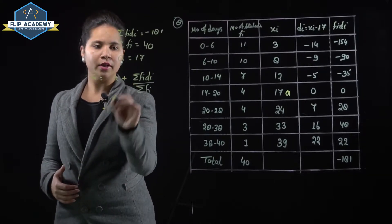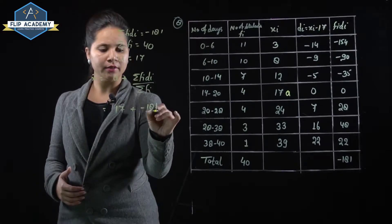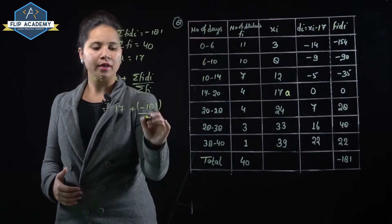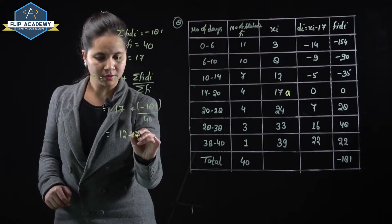A value is 17 plus sigma fi di value is minus 181 divided by sigma fi value 40. Simplified, it equals 12.475.